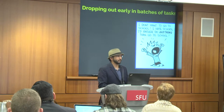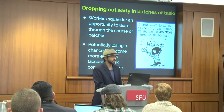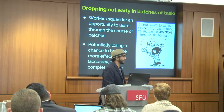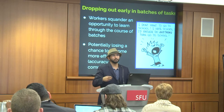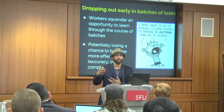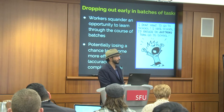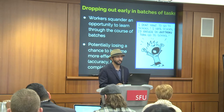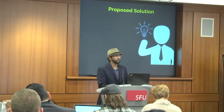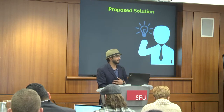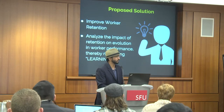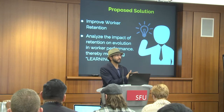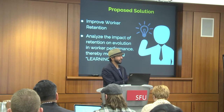But what is the effect of these dropouts? Prior research has shown that when workers drop out early, they also lose out on the opportunity to learn through the course of the batch — because as they keep completing more tasks, they get a better grip on how to complete tasks effectively and efficiently, in terms of how much time is required or what's the easiest way to search for something. So how can we solve this problem? The perspective we present is to try and improve worker retention, arguing that if you retain workers in these long, repetitive batches, you give them additional potential to actually learn and get better through the course of the batch.